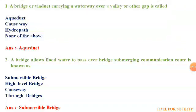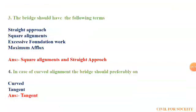The next question: a bridge should have the following terms. The first is straight approach, second is square alignment, third is excessive foundation work, and fourth is maximum uplift. The answer is square alignment and straight approach.